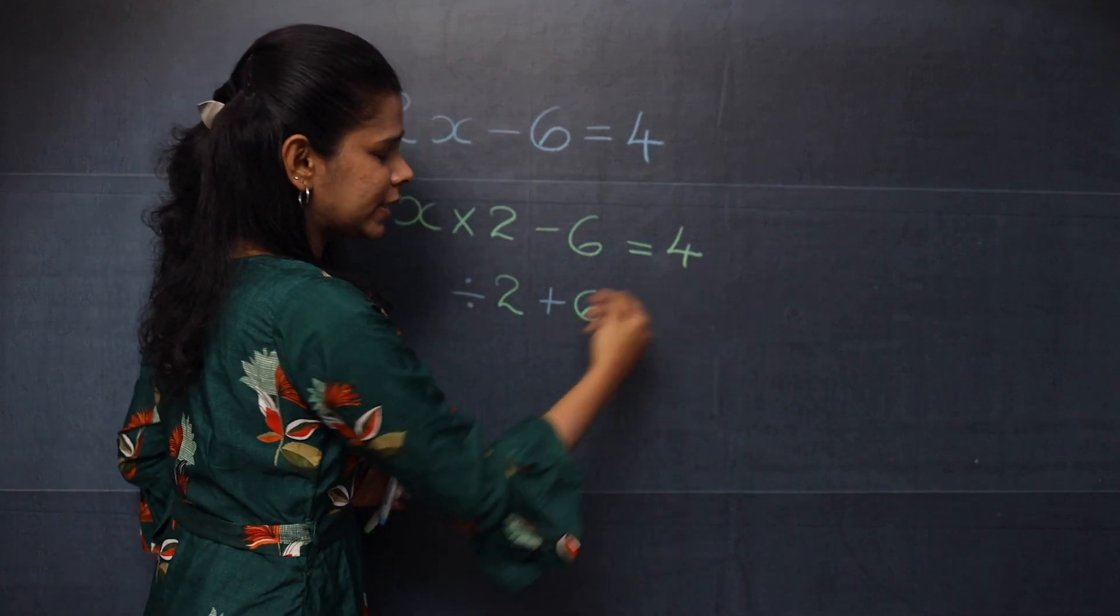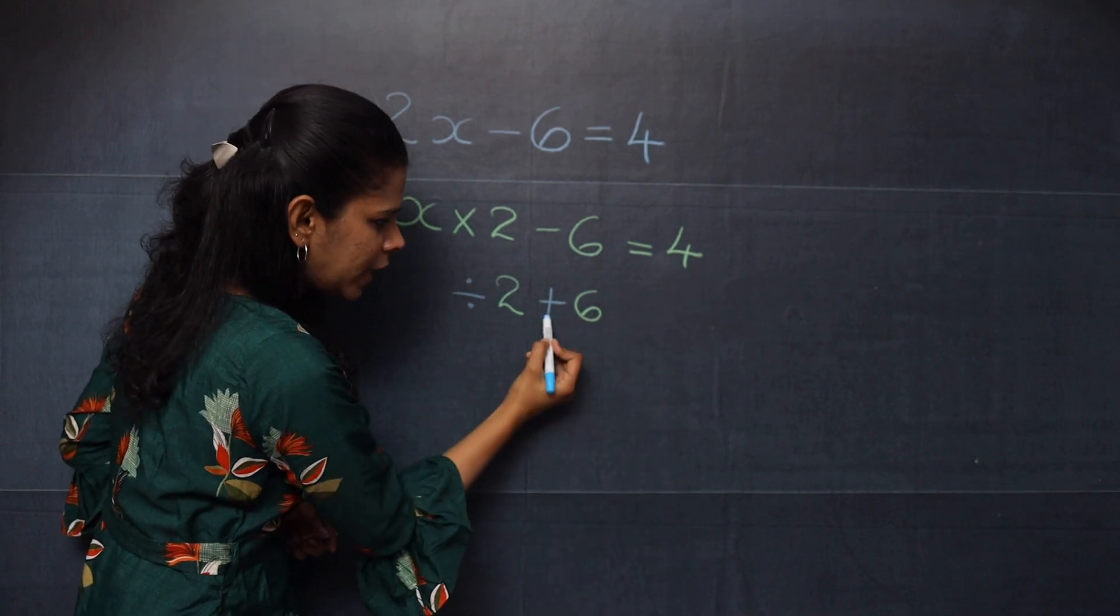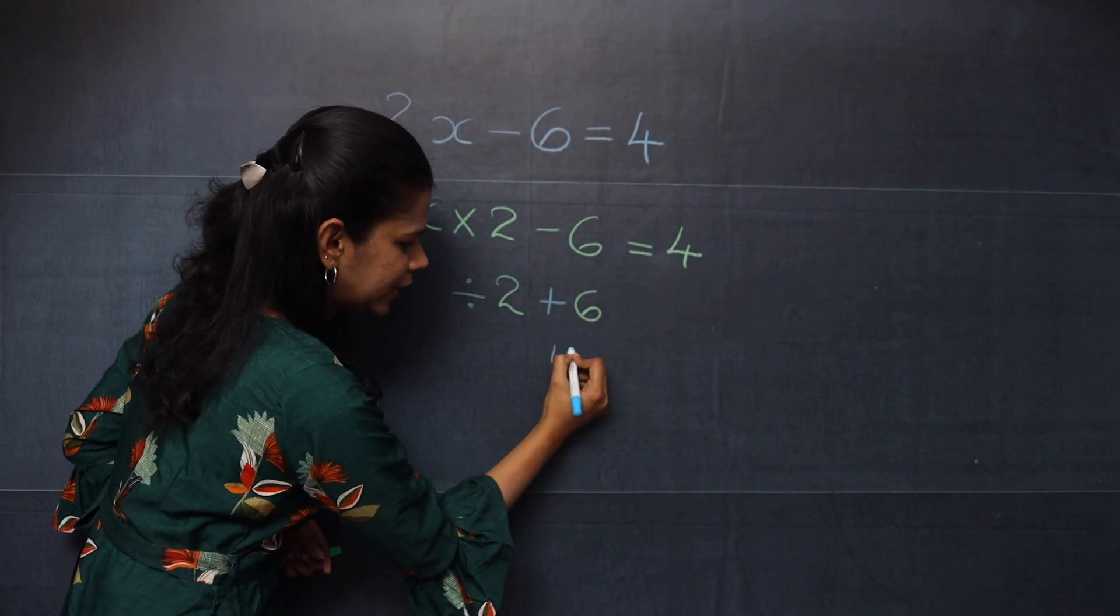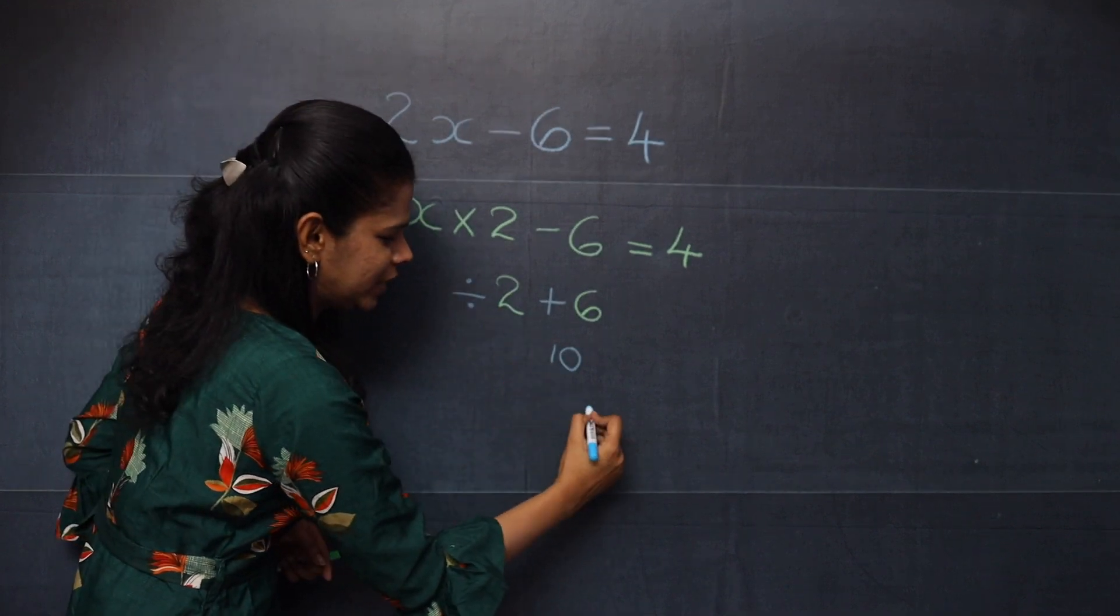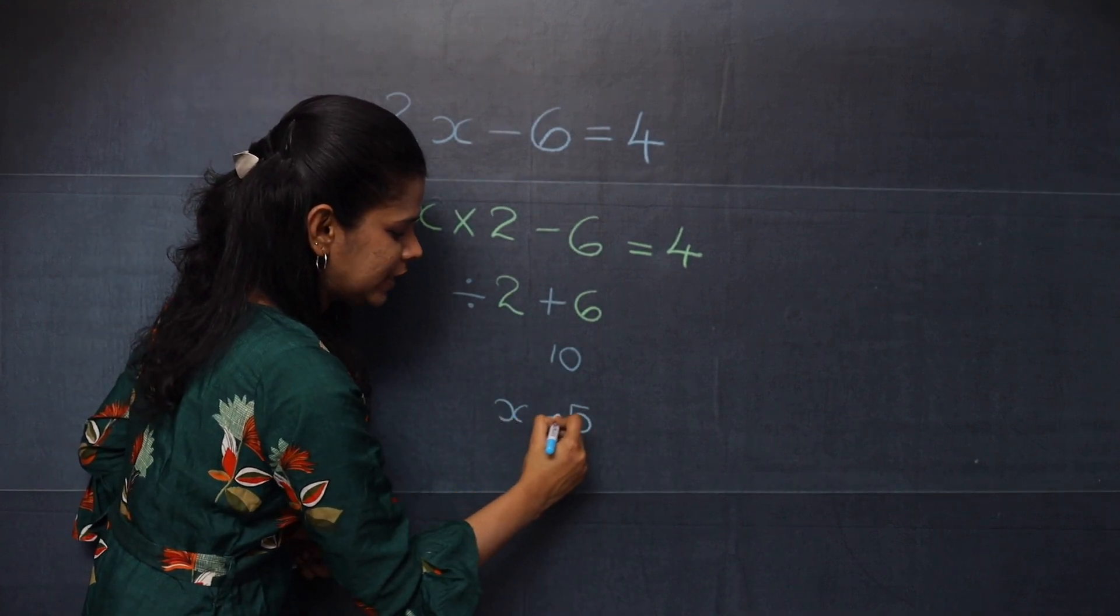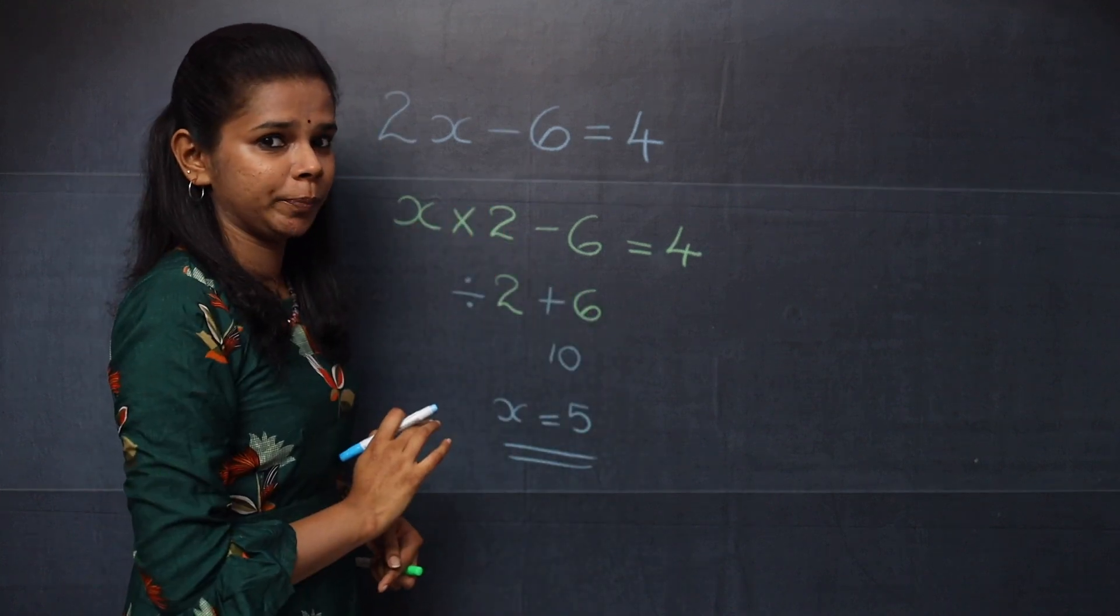Now you will start from this side. You have 4 here. So 4 plus 6, it is 10. 10 divided by 2, it is 5. So x equal to 5 is the solution of this equation.